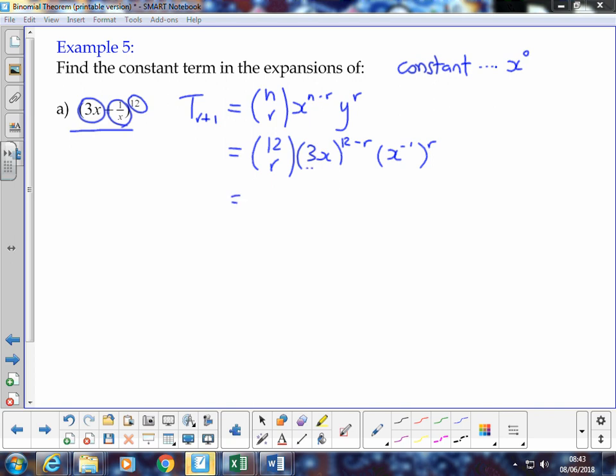Next step, we have our 3 and our x in this bracket, so we're going to split them up, as we have done already. The 3 becomes 3 to the power of 12 minus r, and x to the power of 12 minus r. And I'm going to multiply out that second bracket, x to the power of negative 1, raised to the power of r. Multiply the two powers together, and get x to the power of negative r. So we've got the first two terms.